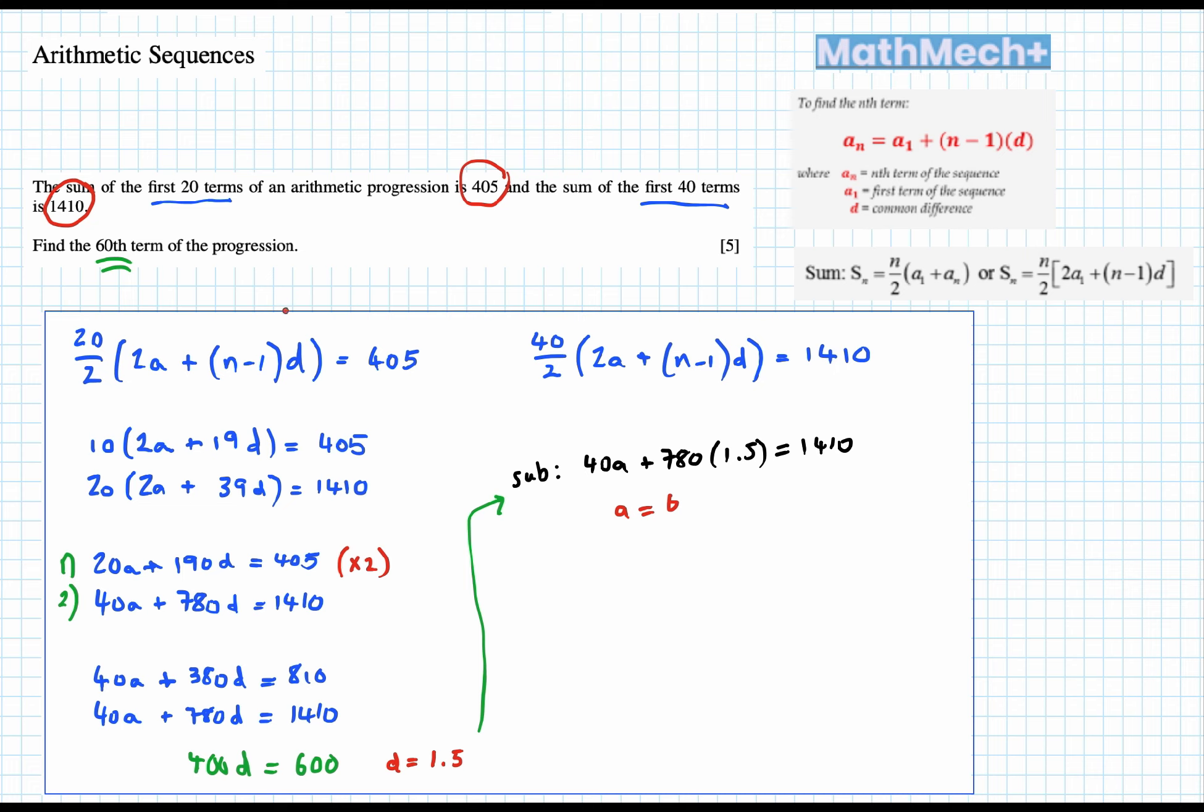What we're asked in the question is to find the 60th term. To find the 60th term we'll use our nth term formula which is a plus n minus 1 times d. So a is 6, 60 minus 1 is 59, times your difference, and you should get either a fraction or a decimal.